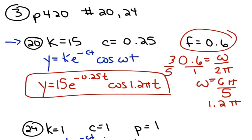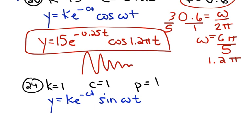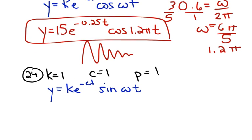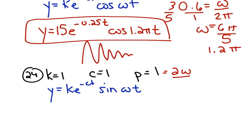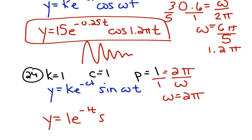I am not going to ask you to graph this on the test, because you know that the graph looks something like this. And we didn't talk about how to graph those by hand. For number 24, they gave you the period instead of the frequency. So that one gets set equal to 2 pi over omega. And when you solve for omega, you find out it's just 2 pi. So y is equal to 1 e to the negative 1 t, sine of 2 pi t.